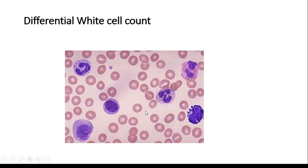There are 5 white blood cell types: Neutrophils, Eosinophils, Basophils, Lymphocytes and Monocytes.